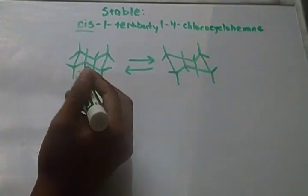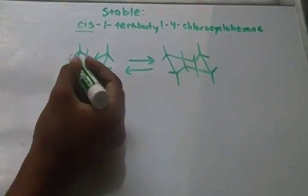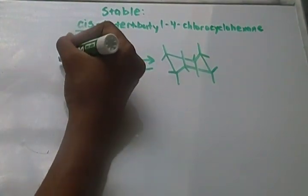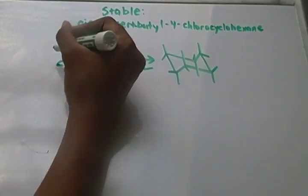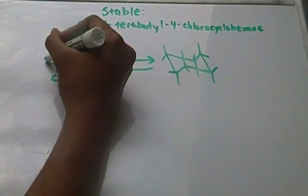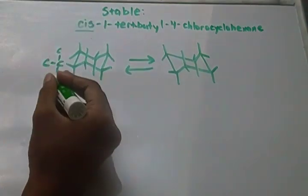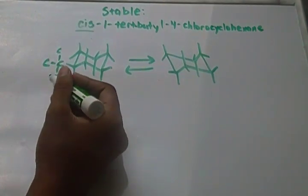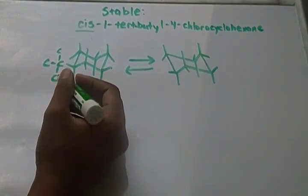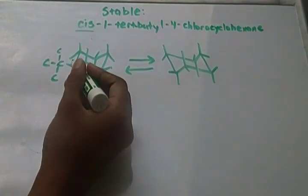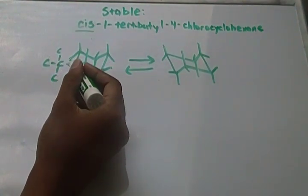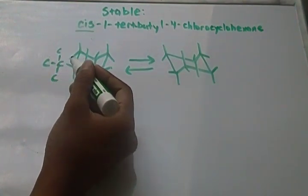So I'm just going to put it at equatorial going up. This is the tert-butyl — I'm going to leave out the hydrogens. So I've put the tert-butyl on the up equatorial position.